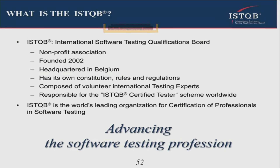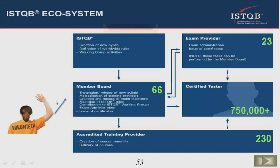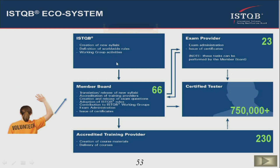ISTQB is a truly international organization. At the heart of things is the creation of new syllabi, definition of worldwide rules, and working group activities. They also have member boards in different countries — India, Singapore, Malaysia, the US, Germany — each in charge of ISTQB activities for that country. They have 23 exam providers all over the world, and accredited training providers accredited by the member boards. ProcessWorks is an ATP, an accredited training provider, associated with ISTQB through the member board.